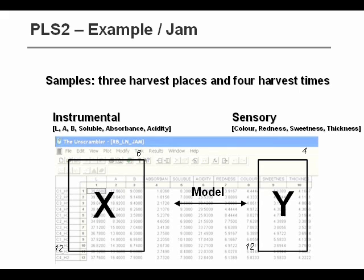So a sensory evaluation is a professional panel that assesses the different jams with respect to different well-defined descriptors such as color, redness, sweetness, etc. So it's a quantitative method. It's a very adequate method for different kinds of quality control and product optimization, but it's also very expensive. And it would be nice if it was possible to avoid the sensory evaluation and instead predict that from cheaper measurements.